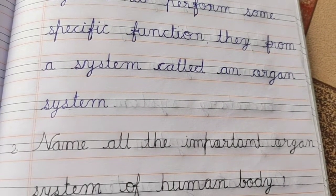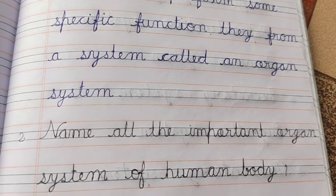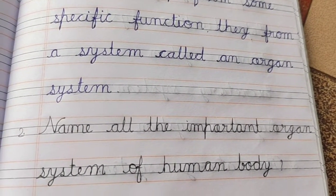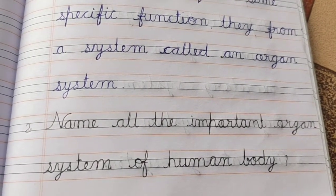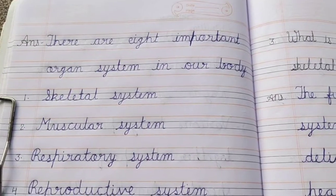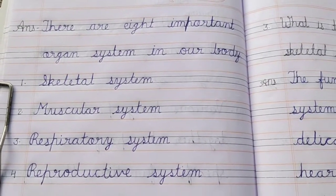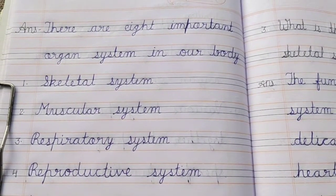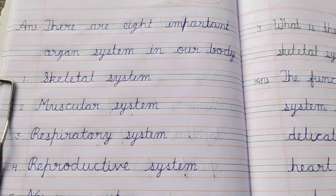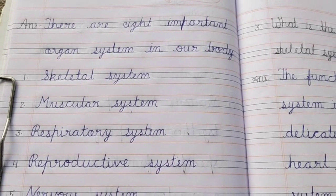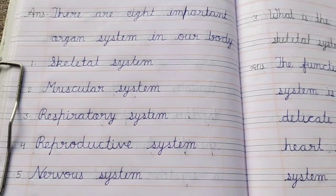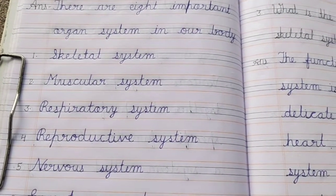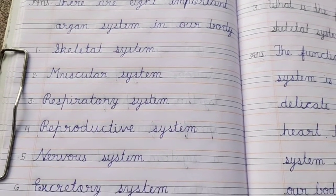Question second is: name all the important organ systems of the human body. There are 8 important organ systems in our body: the skeletal system and the muscular system.